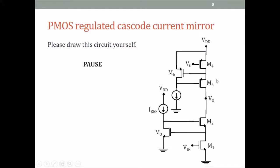Around M5, the cascoded transistor, we add a common source amplifier. The source of M5 is input to the gate of the common source amplifier, and the output of the common source is fed back to the gate of M5. That is exactly what is happening in the NMOS side also: the source of M2 is fed to M3 and the output of M3 is fed back to the gate of M2. This is a single-ended, regulated telescopic cascode amplifier.